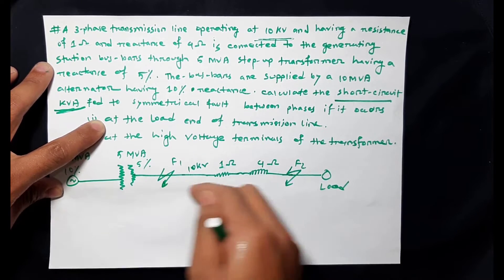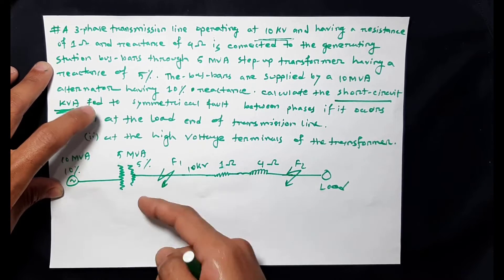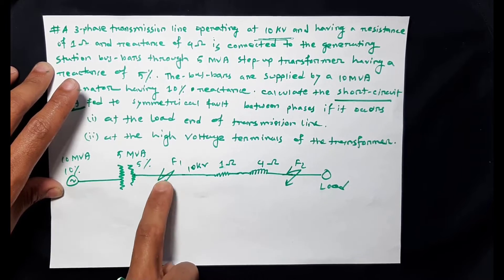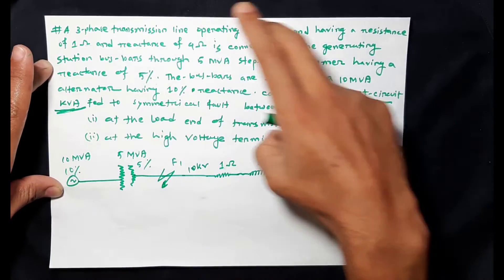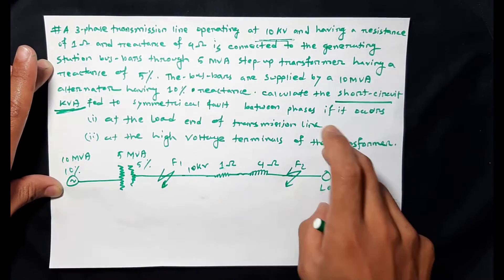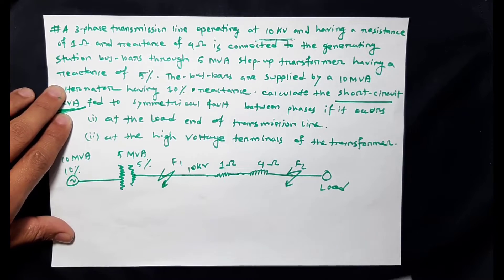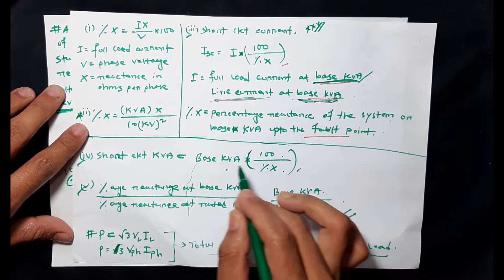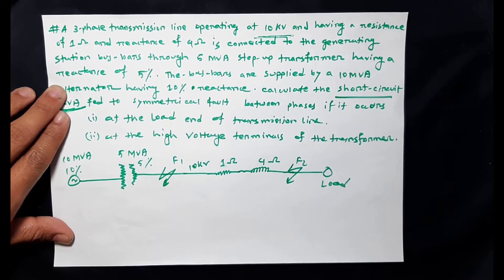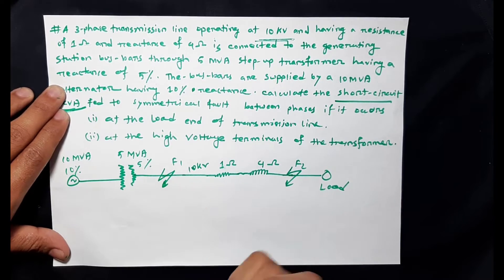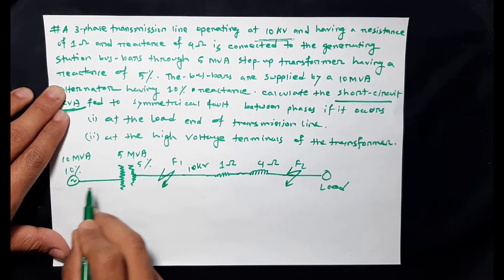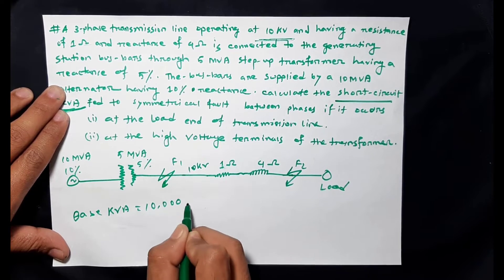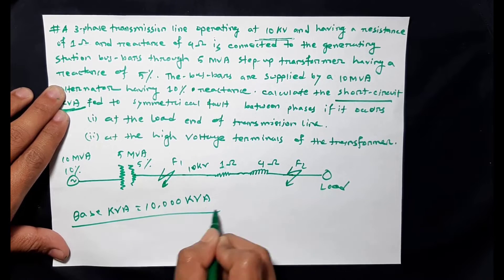F2: the total fault short circuit kVA at the high voltage terminals of the transformer. The high voltage side short circuit kVA. The base kVA is 10 MVA — so I take 10 MVA as the base.